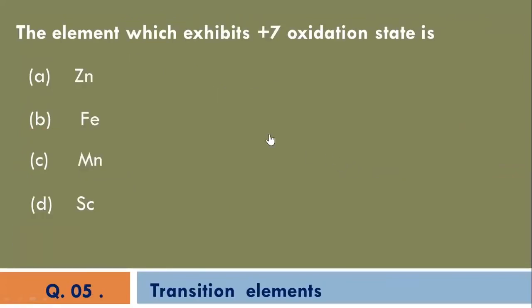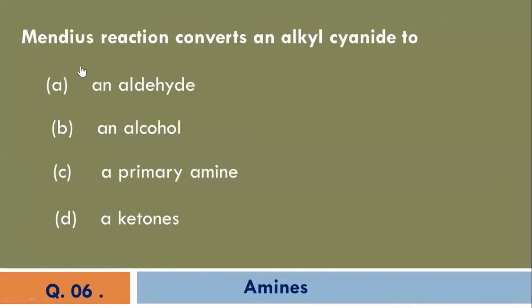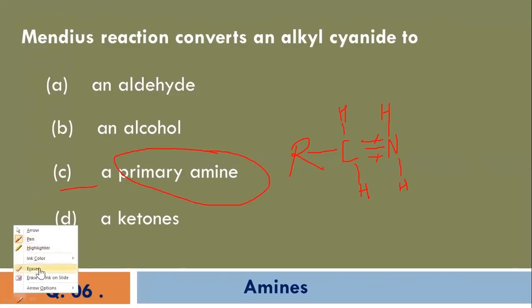The element which exhibits plus 7 oxidation state is C, the correct option. Mendes reaction converts an alkyl cyanide where C triple bond is reduced to CH2NH2. C is the correct option of this question.